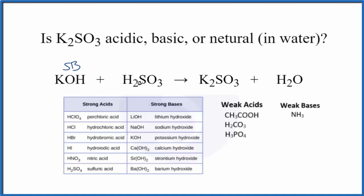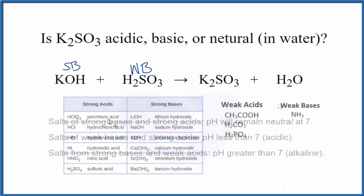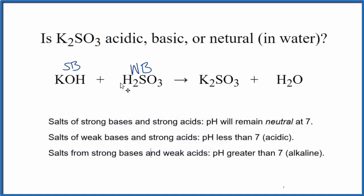On our list of strong acids, I'm looking for H2SO3. There's H2SO4, but I don't see H2SO3 here, so if it's not on the list, that's going to be a weak acid. So we know the strength of the base and the acid.